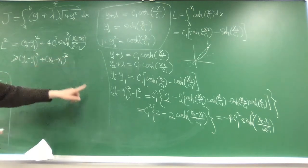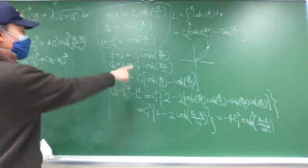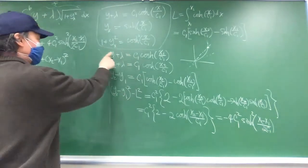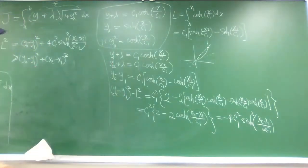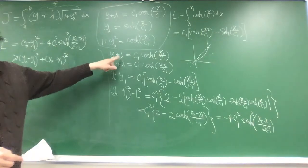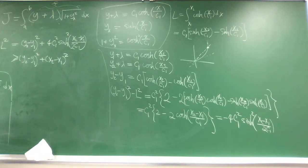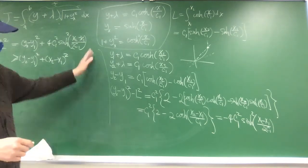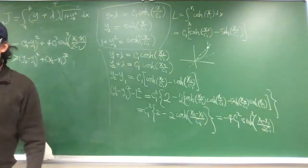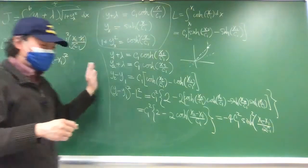Once you have solved for c1, substitute back into either boundary condition to solve for the Lagrange multiplier lambda, completing the full solution.